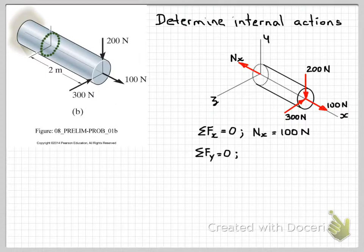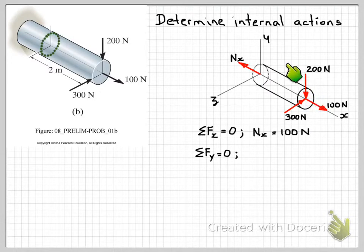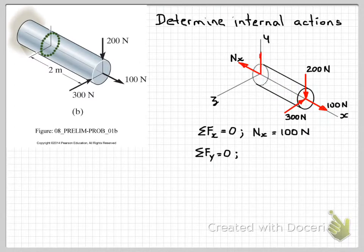Next we'll look at the sum of forces in the y direction — the vertical direction. Here we have a 200 Newton force; that's the only external load applied to this side of the structural member that we're looking at. So internally we must have an equal and opposite force for equilibrium. We can write our equation of equilibrium, and our internal shear force Vy is equal to 200 Newtons.